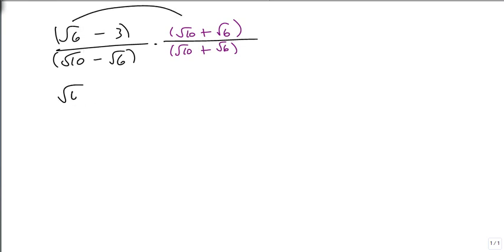√6 times √10 is √60. √6 times √6 - there is a shortcut here because I'm multiplying the same thing by itself under a square root. I could just get what's in the radicand, but I'm going to show this all the way out.